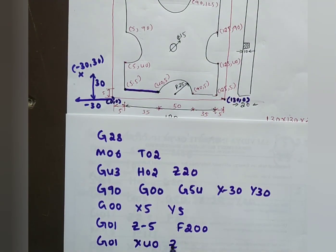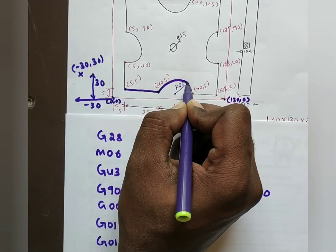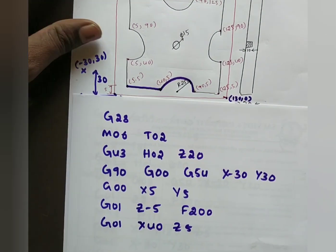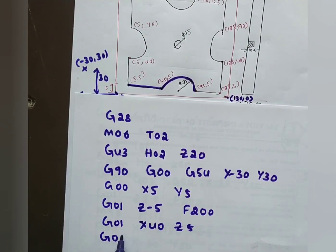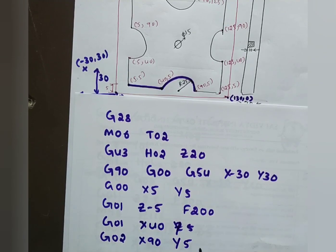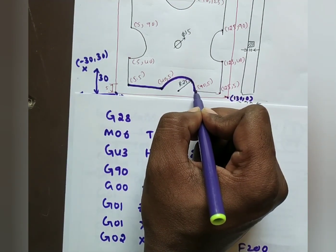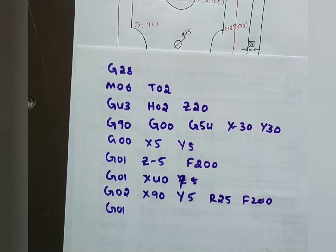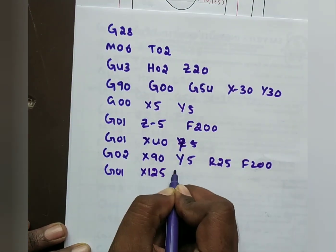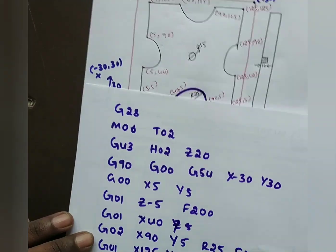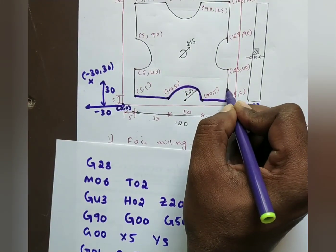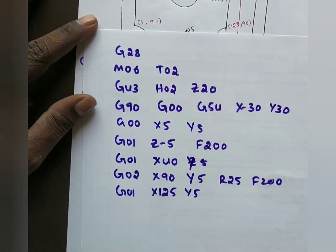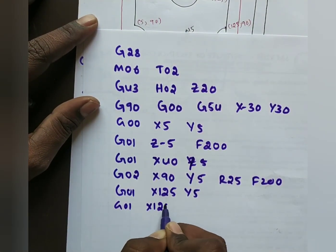Move tool linearly to X40 Y5 using G01. Then circular interpolation clockwise G02 from X40 Y5 to X90 Y5, radius 25, feed 200 mm/min. Move linearly G01 to X125 Y5. Then linear G01 to X125 Y40.